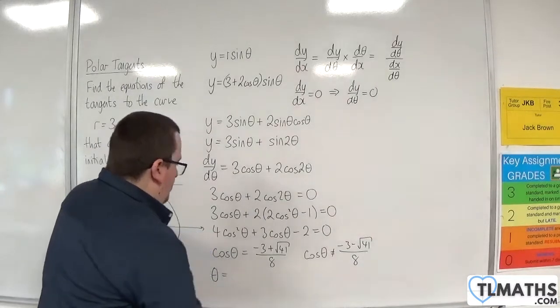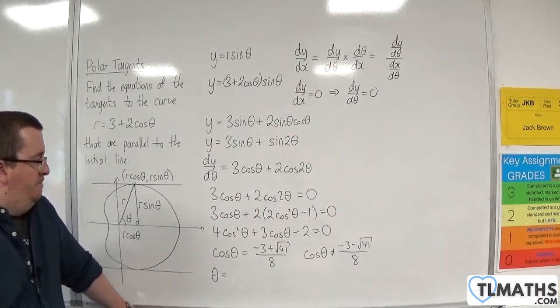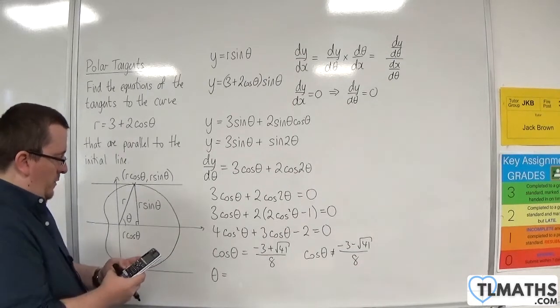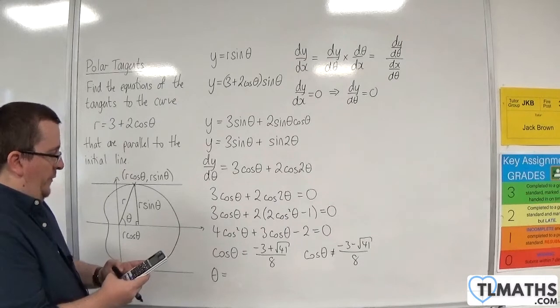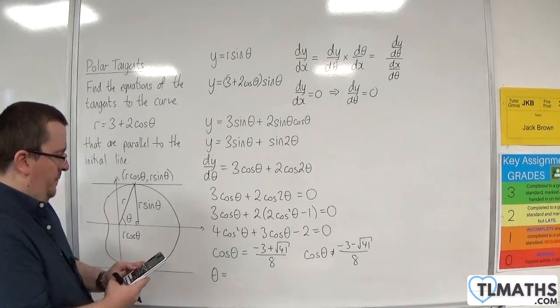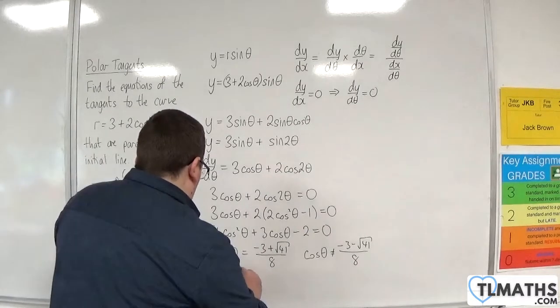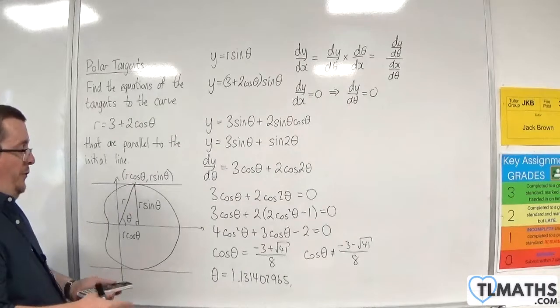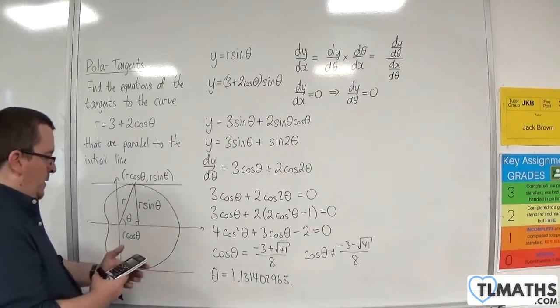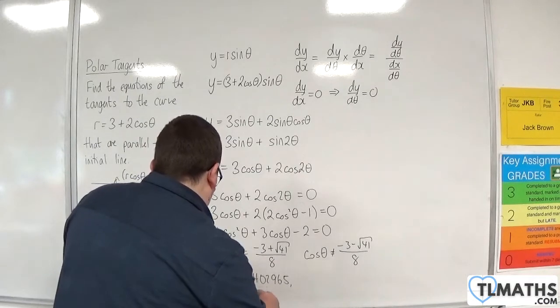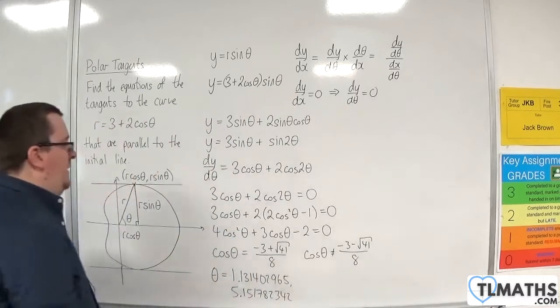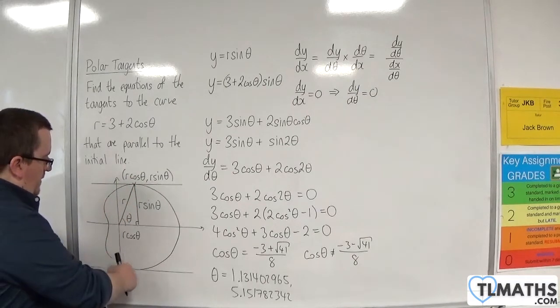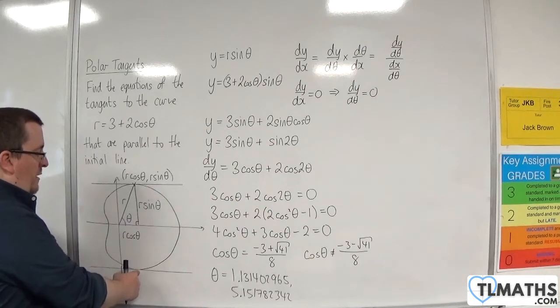Okay. So, what are the two values of theta? Now, go with that. So, inverse cosine of, make sure you're in radians, minus 3 plus root 41 over 8. And we get 1.131402965. And the cosine curve, so I'm going to take that away from 2 pi. So, 5.151782342. So, I'm getting two values of theta because we're getting two angles. There's the one there and then around here. And then I get that one. So, that's going to be the angle 5.15. Okay.